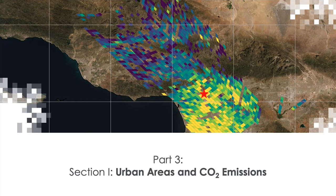Finally, we will see that these measurements by themselves provide an indicator of net emissions, but what the community and the world really wants to know is the different sectors contributing to urban emissions. We will see how we can bring in information from other satellites or sensors that provide information about other trace gases like methane, carbon monoxide, or nitrogen dioxide, and use those together with CO2 observations from OCO-3 to get an understanding of sectoral emissions.